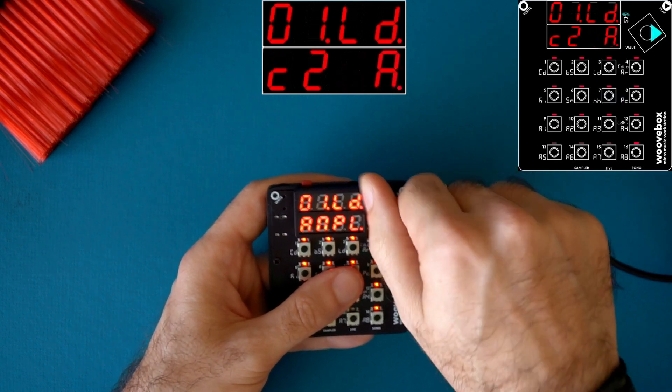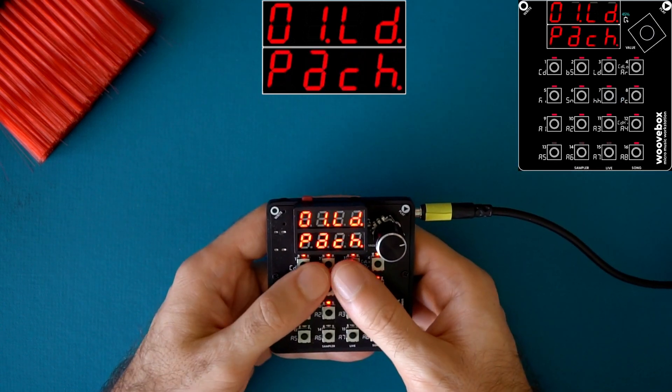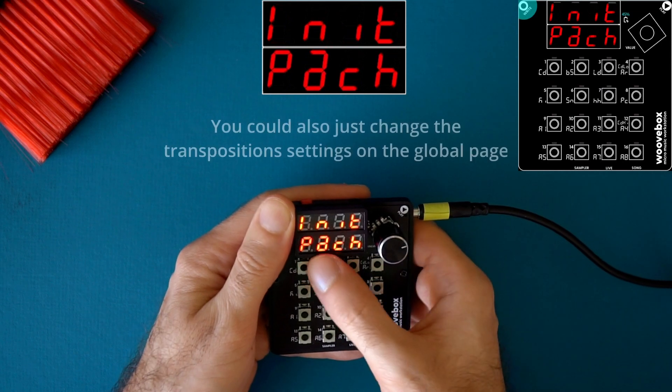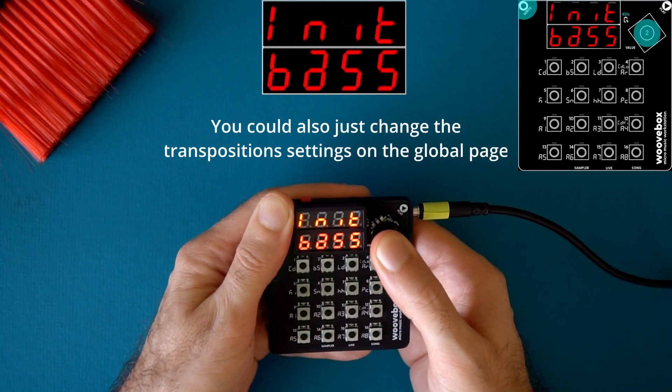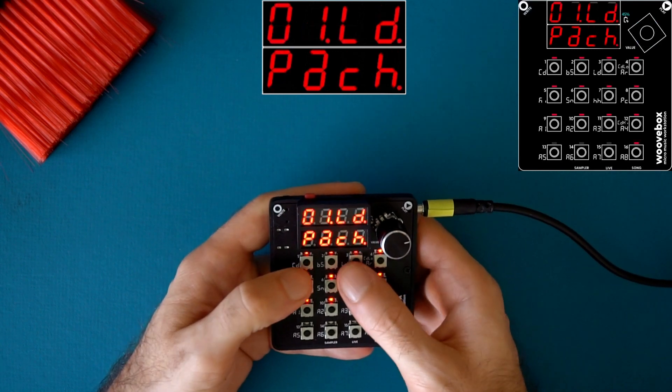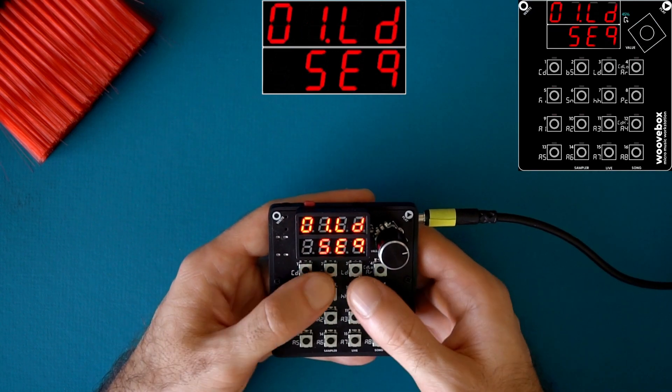So if I go back to the patch page and I initialize the patch by holding right and clicking the encoder until it says init patch and then pressing and holding down the encoder. There you go.